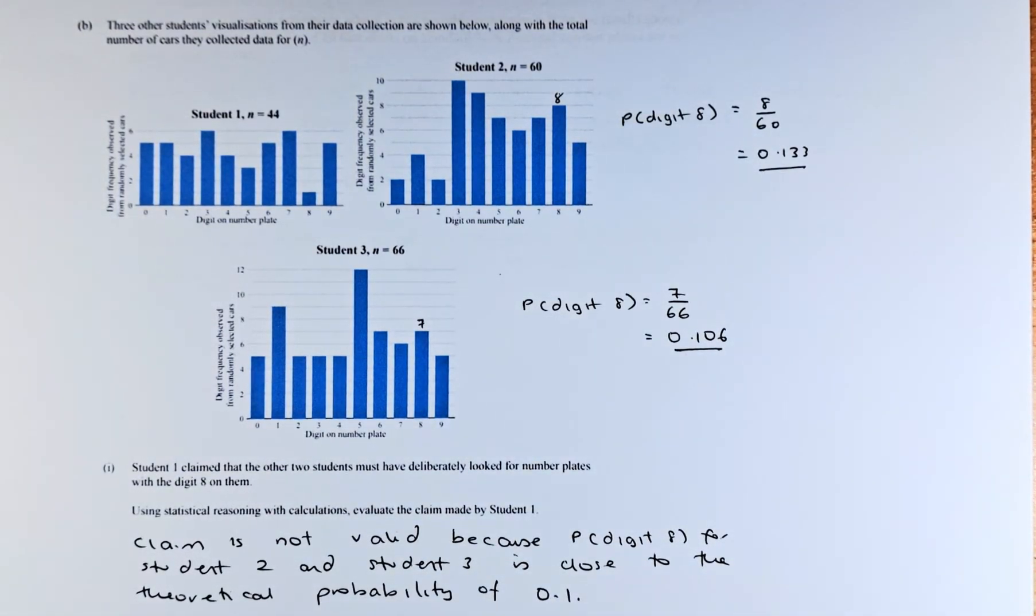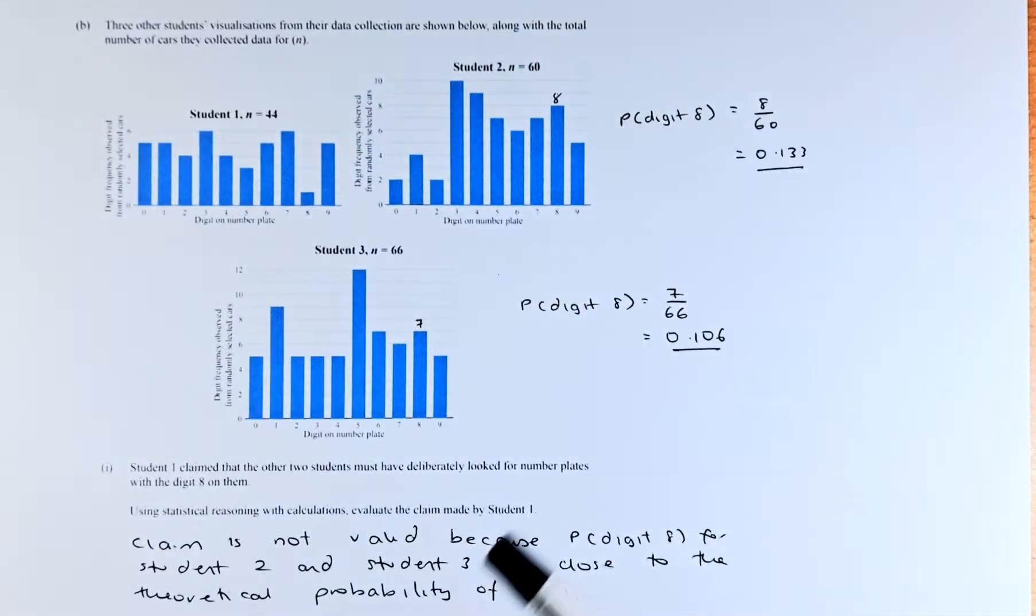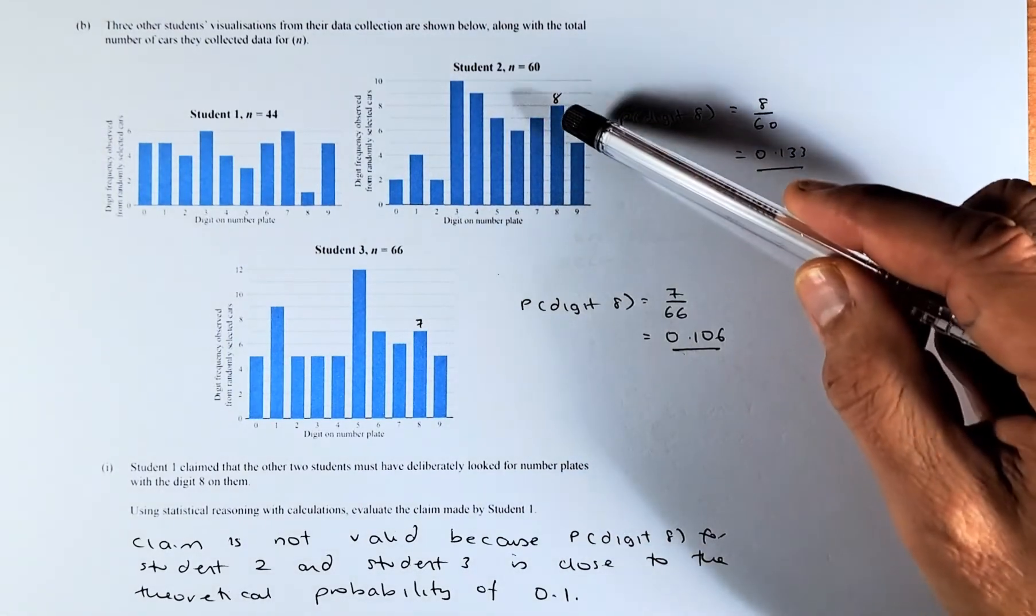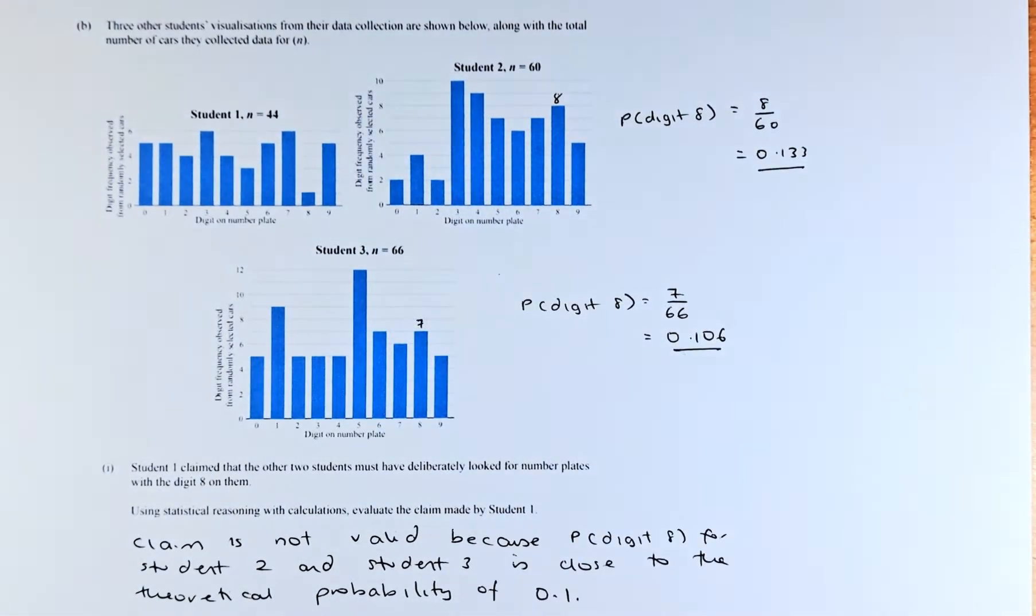Student 1 claimed that the other two students must have deliberately looked for a number plate with the digit 8 on them. Because for Student 1, they only have like 1 out of 44. Student 2 have number 8 will be 8 out of 60. And Student 3 will have 7 out of 66.